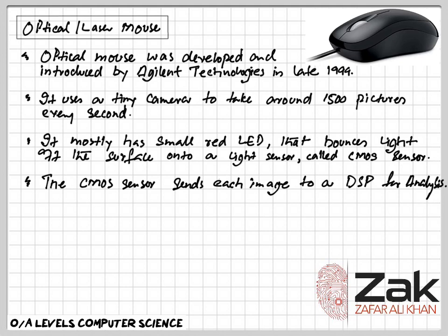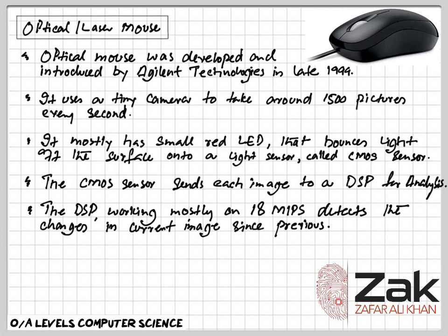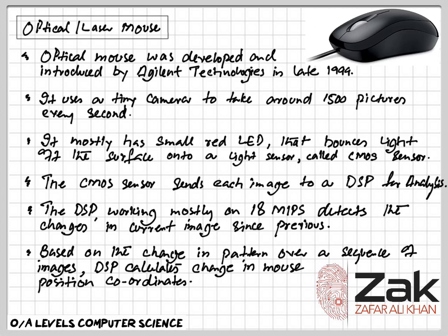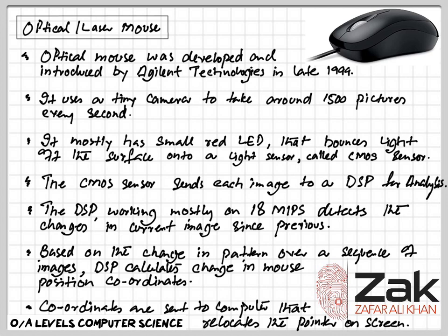The DSP, working mostly at a speed of 18 million instructions per second, is able to detect patterns in the image and see how those patterns have moved since the previous image. Based on the changes in patterns over a sequence of images, the DSP determines how far the mouse has moved and sends the corresponding coordinates to the computer.